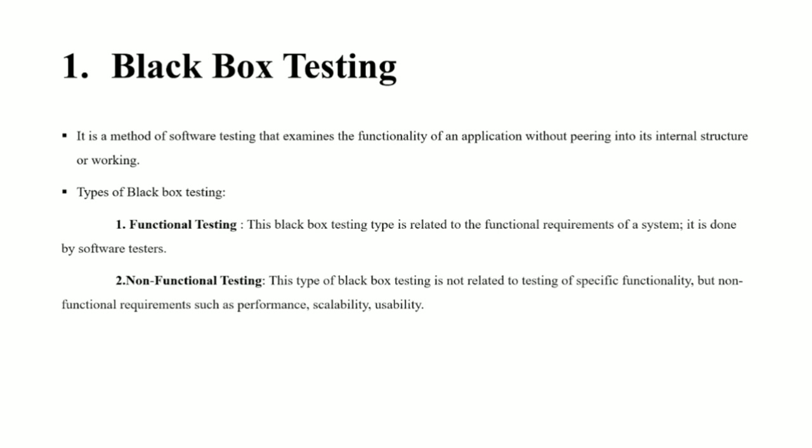Now we will see black box testing. It is a method of software testing that examines the functionality of an application without peering into its internal structure or working. The types of black box testing are functional testing and non-functional testing. Functional testing is related to the functional requirements of a system and is done by software testers. Non-functional testing is not related to testing of specific functionality but covers non-functional requirements such as performance, scalability, and usability.